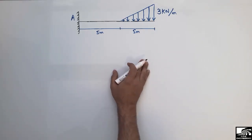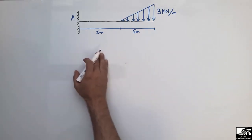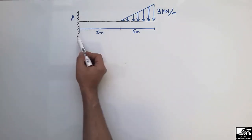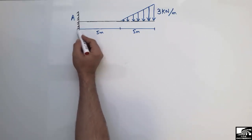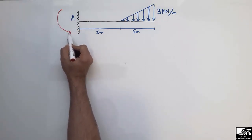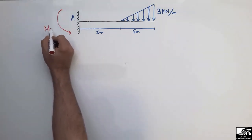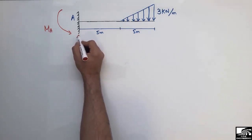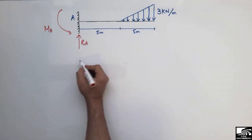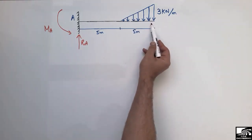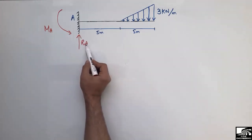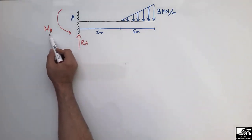To draw the shear force and bending moment diagram, the first step is to find the support reactions. We have only one support, so all the load will be resisted there. The fixed support can resist both a vertical reaction RA and a moment MA. The whole load on the right side of the beam will be taken by this left support.